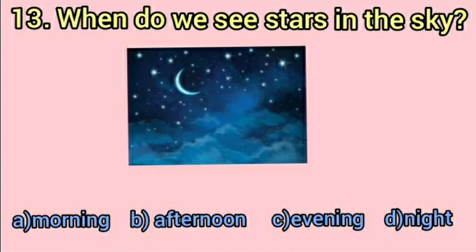Next option is option D — Night. Do we see stars in the night? Yes, we see stars in the night sky. So this option is correct. Now we put tick on this option.